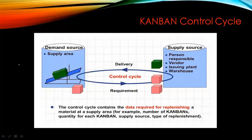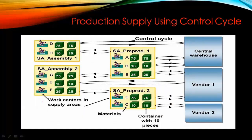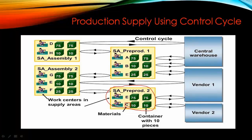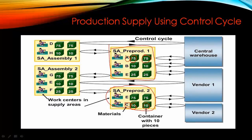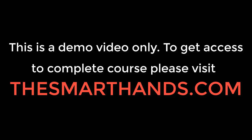Then the master data is set up — I will demonstrate this practically in SAP. Then the control cycle will start, where you can specify the person responsible, vendor, issuing plant, warehouse, etc. For example, one work center has material C in two containers. When one is empty, you can use the second one while the first is being refilled. For material A on another work center, you might have two containers of 75 quantity each. You can have one container, two containers, or more depending on how much quantity you need.